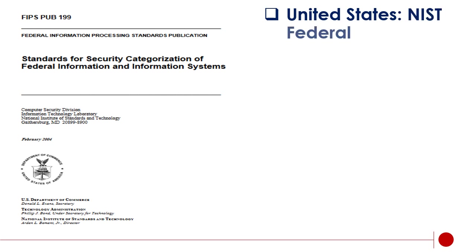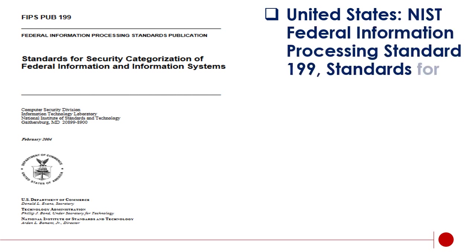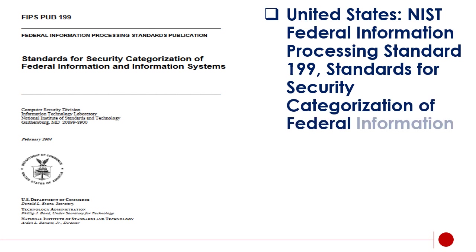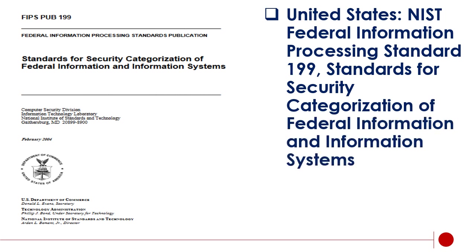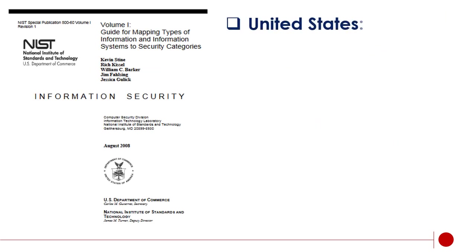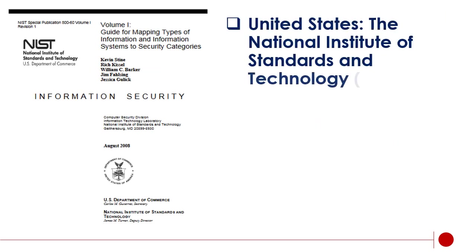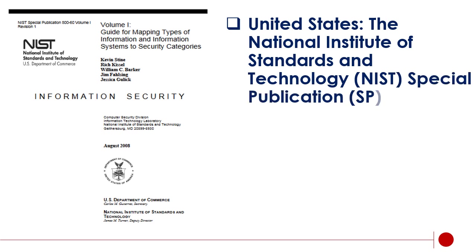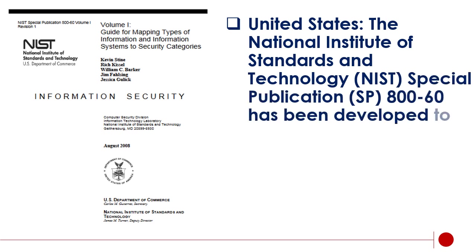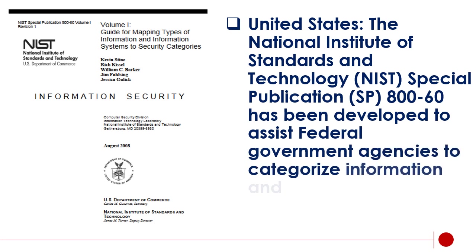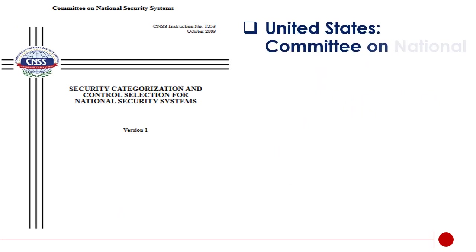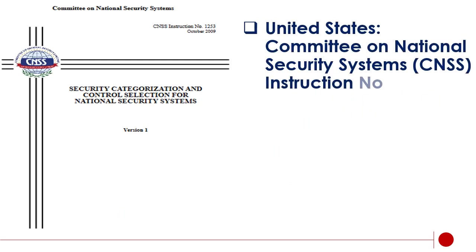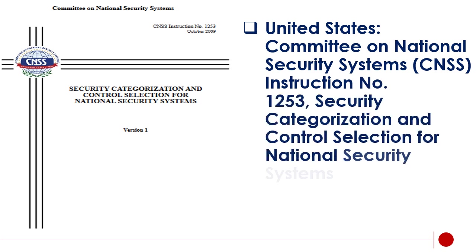In the United States, NIST Federal Information Processing Standard 199 provides standards for security categorization of federal information and information systems. NIST Special Publication SP 800-60 has been developed to assist federal government agencies to categorize information and information systems. The Committee on National Security Systems, CNSS, Instruction No. 1253 addresses security categorization and control selection for national security systems.